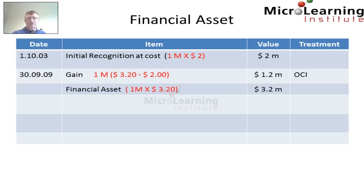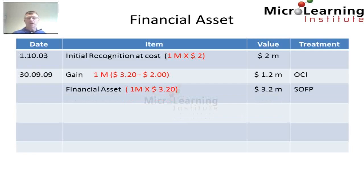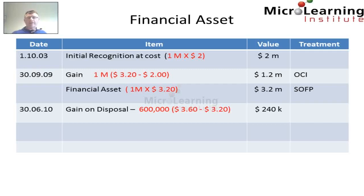On the 30th of September 2009, which is the opening balance sheet for this question, we have 1 million shares valued at $3.20 per share, so we have a financial asset on our statement of financial position valued at $3.2 million. In the middle of the year, on the 30th of June 2010, the company disposes of 600,000 shares and makes a gain relative to their carrying amount of $3.20 of $0.40 on each share, because we sell them at $3.60 per share. So consequently, we recognize a gain on disposal. Even though the financial asset is treated at fair value through other comprehensive income, any gain on disposal is taken to profit and loss for the holding company.